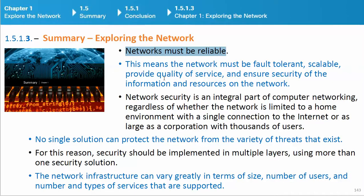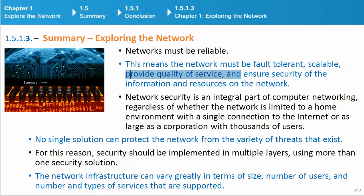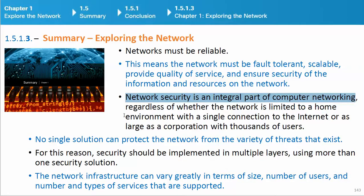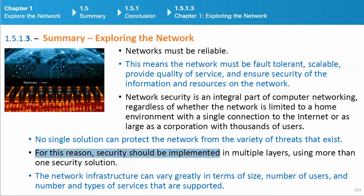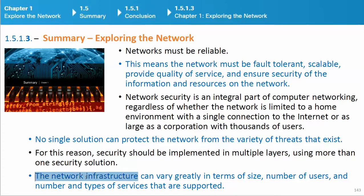Networks must be reliable — this means the network must be fault tolerant, scalable, provide quality of service, and ensure security of the information and resources on the network. Network security is an integral part of computer networking, regardless of whether the network is a home environment or a large corporation. No single solution can protect the network from the variety of threats that exist, so security should be implemented in multiple layers using more than one security solution. The network infrastructure can vary greatly in terms of size, number of users, and number and types of services that are supported.